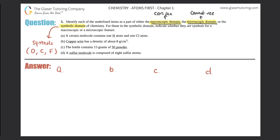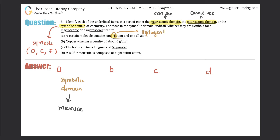Letter A: a certain molecule contains one H atom and one Cl atom. The key here is that they used H — a one-letter code — which is the symbol for hydrogen. Since they used that symbol, it's automatically part of the symbolic domain. Now we need to determine whether it represents a macroscopic or microscopic feature. Since they're talking about individual H atoms, and we cannot see individual atoms or molecules, this would be part of the microscopic feature.